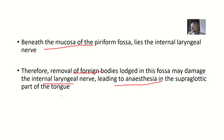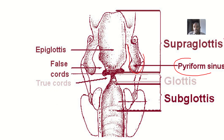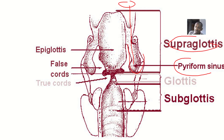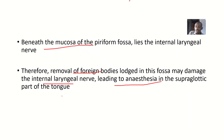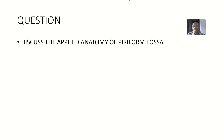Injury to this nerve leads to anesthesia in the supraglottic part of the larynx. You know that the tongue is responsible for tasting, so anything that affects this area will affect how you taste food. The supraglottic area up to the supraglottic part of the tongue is supplied by the internal laryngeal nerve, and injury will cause anesthesia to this region.